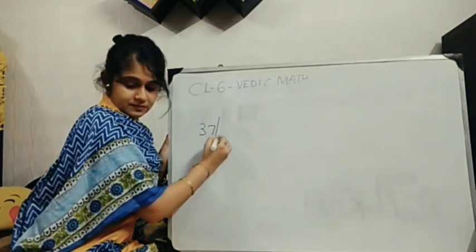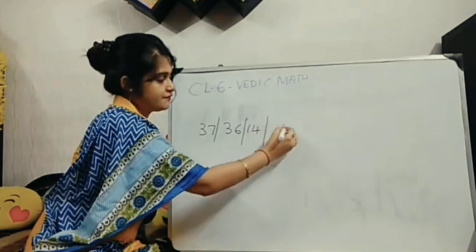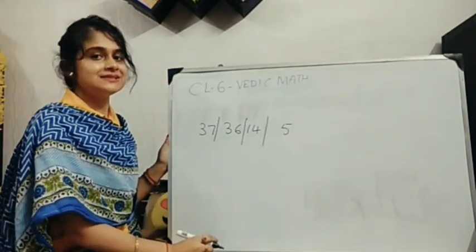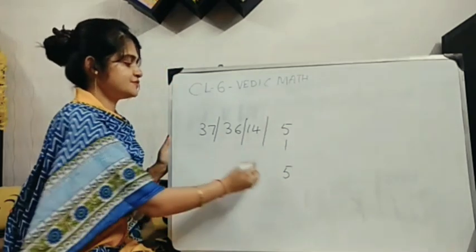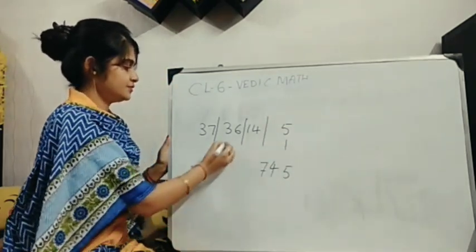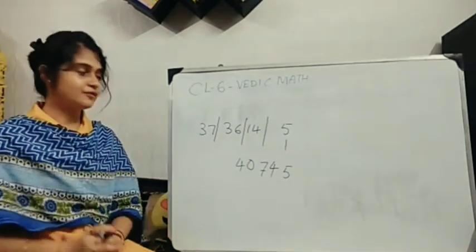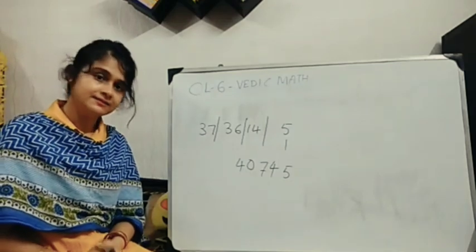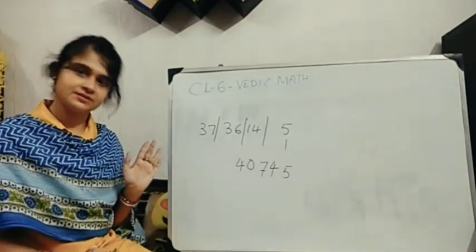37, 36, 14, 5. When it is 5, I consider 0. 5 I put down. 0 moves. 4 I put down. 1 moves. 7 I put down. 3 moves. 4, 0, 7, 4, 5. Clear? I have not written anything. Direct you need to write the answer.